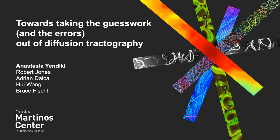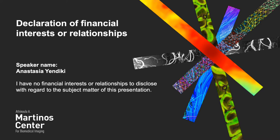Hi everyone! Today I will propose an approach to resolving the ambiguities that arise in diffusion tractography due to the presence of multiple axon populations per voxel. I have no conflicts to declare.